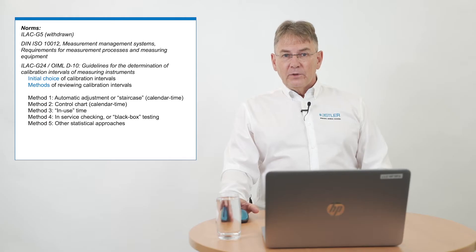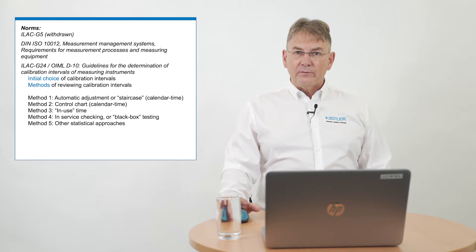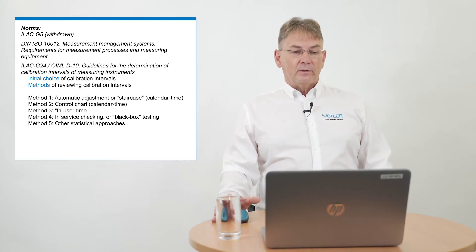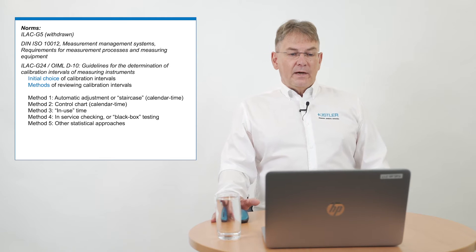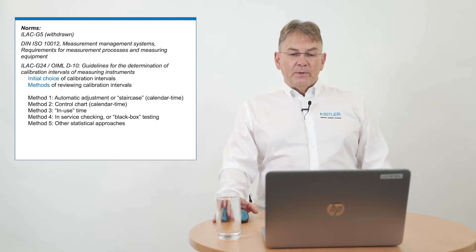What we can do is dig further into applicable norms and specifications. We found ILAC G5, a norm which has been pretty good and gives helpful hints for everyday work, but it's unfortunately withdrawn. We have the DIN ISO 1012 measurement management system — requirements for measurement process and measuring equipment — but it doesn't really help; it's very global. But we found something else: the ILAC G24-OIML-10, which is called guidelines for the determination of calibration intervals of a measuring instrument.